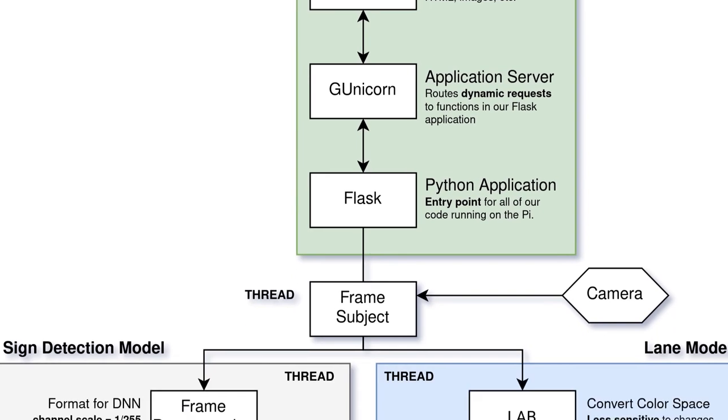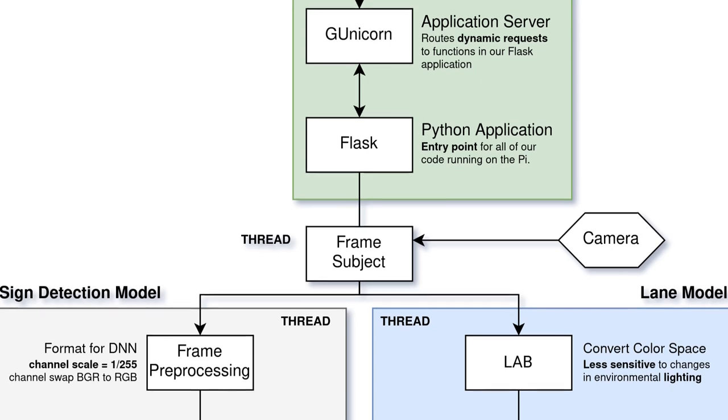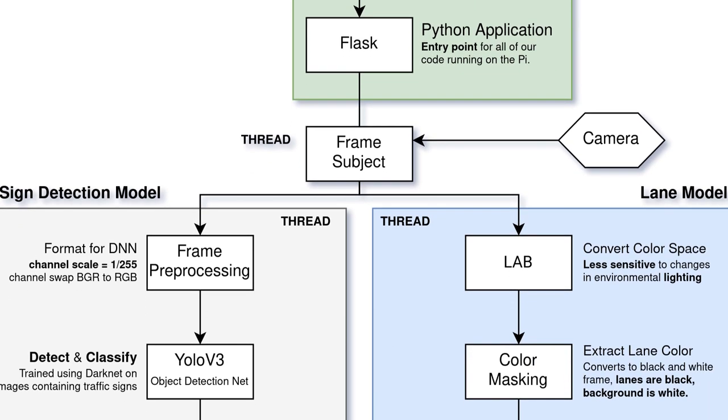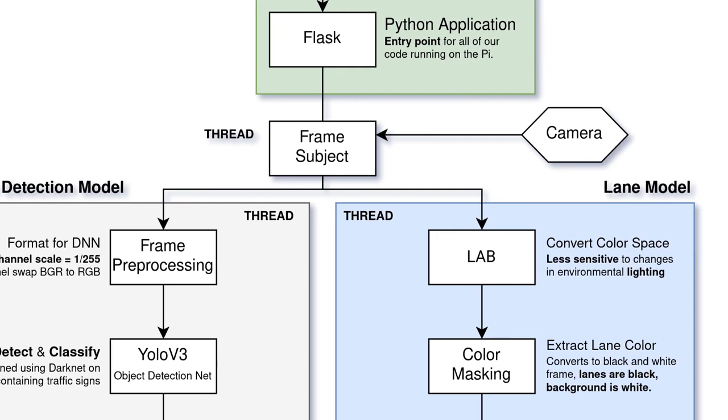The server is also responsible for starting the automation system. The automation system begins in code with a frame subject which is a simple object that captures images, or frames, continuously from the camera. We have two models which take a copy of each frame: the lane model and the sign detection model. Since these models are both computationally expensive, we set them up to process frames in their own thread. This ensures that other parts of our application are not slowed down. It is important to note that these models are fully independent from each other. That is, one model does not affect the result of the other.